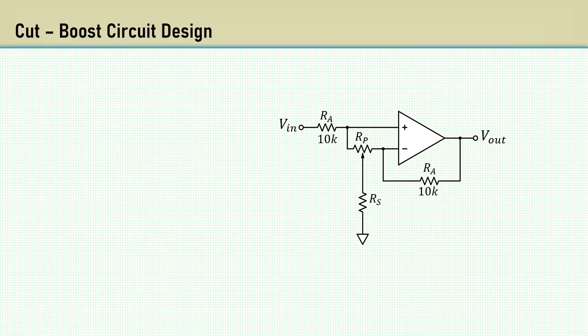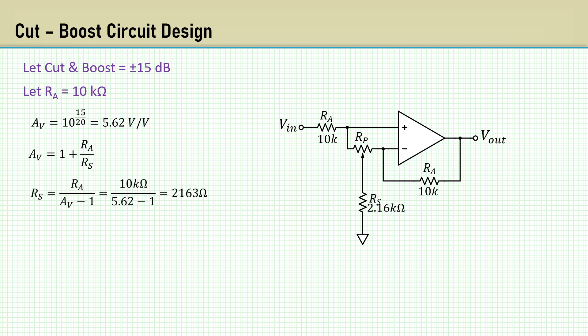Designing the cut boost circuit is a breeze. Let the cut boost level be plus or minus 15 dB. Let RA equals 10K. The voltage gain of 15 dB is 5.62 volts per volt. The voltage gain at the boost position is just the non-inverting amplifier gain of 1 plus RA over RS. Rearranging to solve for RS gives us 2,163 ohms. The potentiometer varies the attenuation to gain ratio at midpoint, so its value is not too critical. Let's check that out.